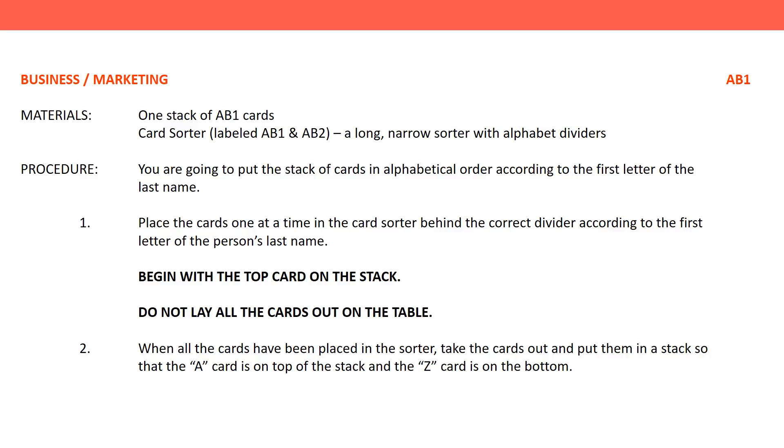Business Marketing, AB1. Materials: one stack of AB1 cards, card sorter labeled AB1 and AB2, a long narrow sorter with alphabet dividers.